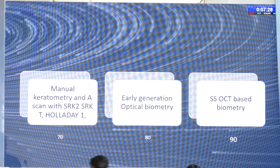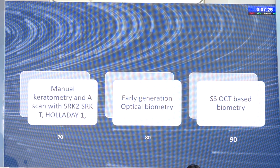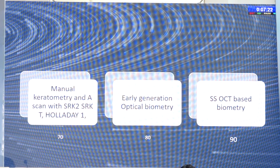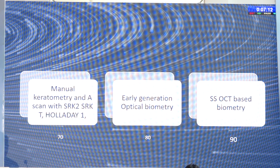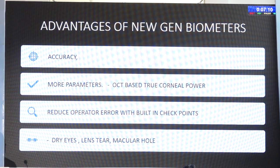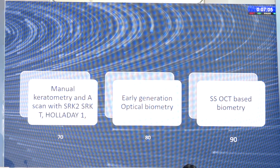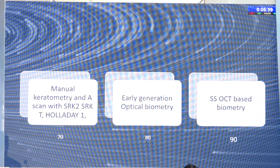If we continue to use manual keratometry in 0.5 steps and an early generation formula like SRK/T, we are probably at 70% plus. But if you switch over to SS-OCT-based biometry and one of the more recent formulae — all available free and online — you are going to get 90% plus. If you want better results, we have to switch over; the machines have to be better and the formulae have to be better.